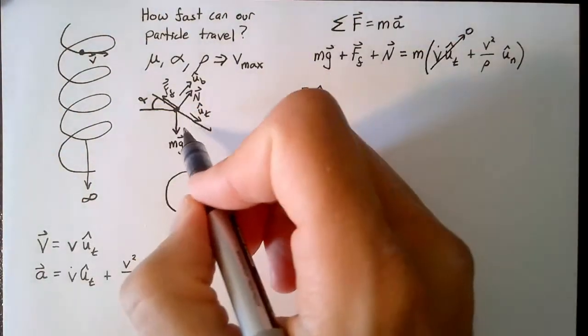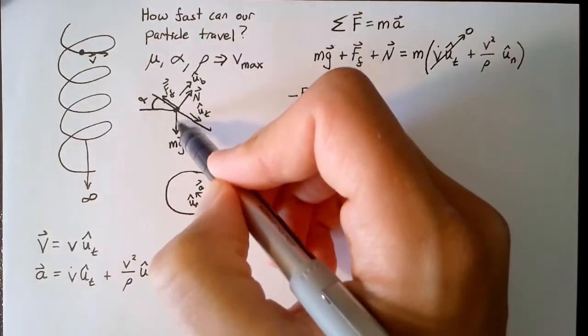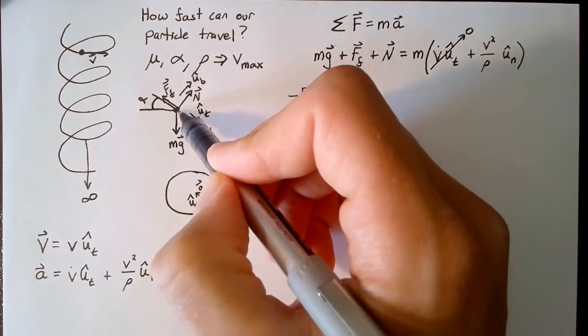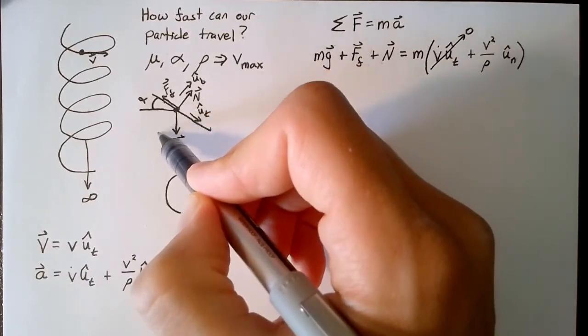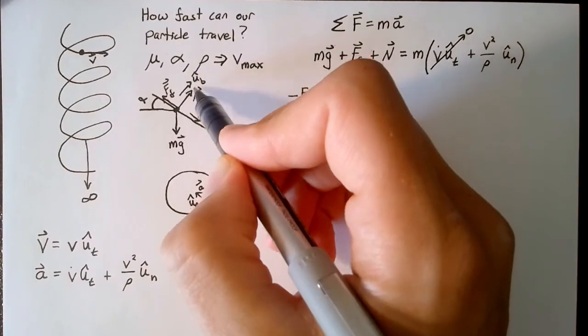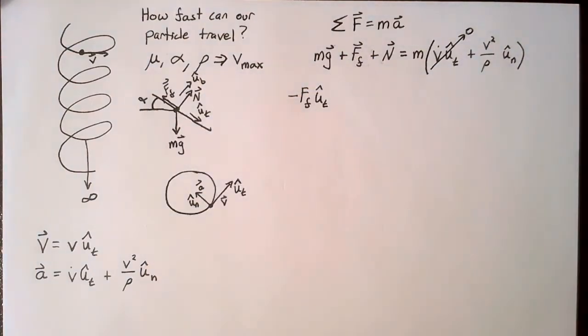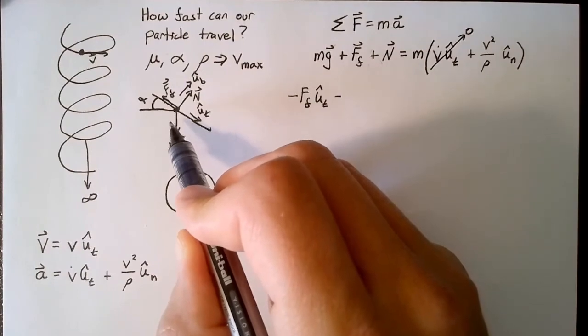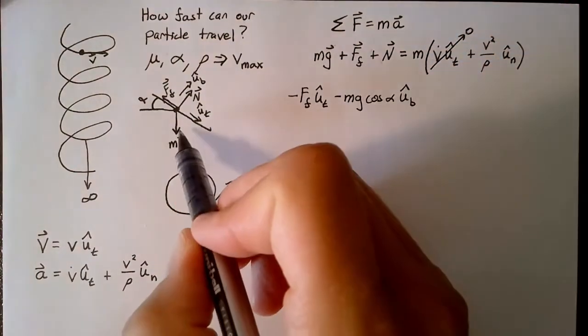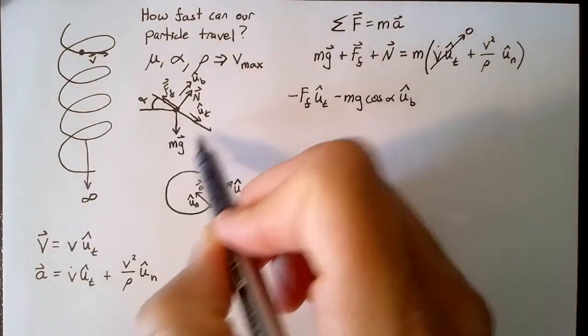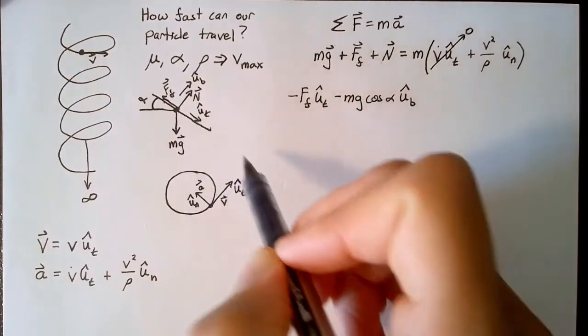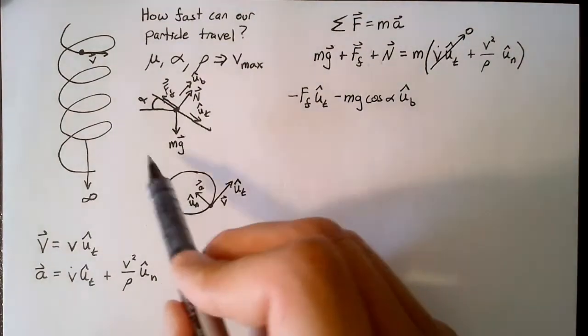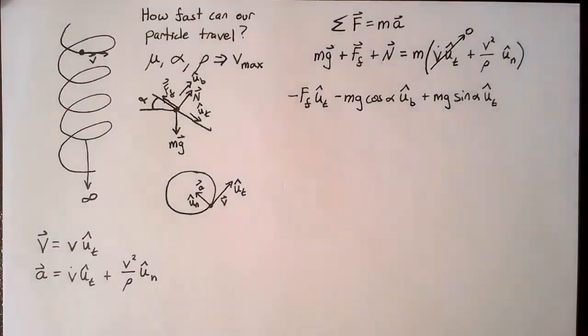So we have a mg cosine alpha term in the binormal direction. As alpha goes to zero, the binormal is directly opposite of mg. We know that because cosine of zero is equal to one. The other component of our gravity term is going to be in the tangent direction. And since we already used cosine, that has to be sine.